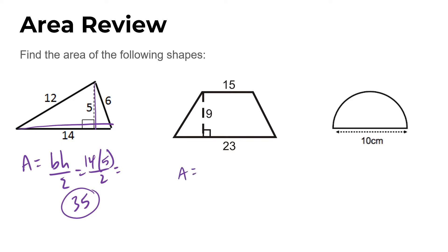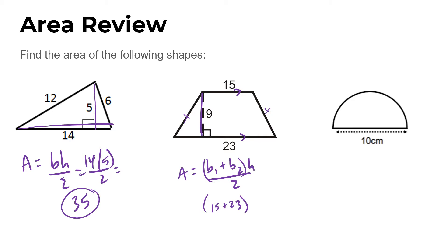For the trapezoid, the formula is: base 1 plus base 2, times height, divided by 2. I highly recommend writing the formula down first and then plugging in your numbers. We can identify the two parallel sides as the bases, so we plug in 15 plus 23, multiplied by the height of 9. Remember, the height must be perpendicular to the bases — use the 9, not one of the slanted sides.